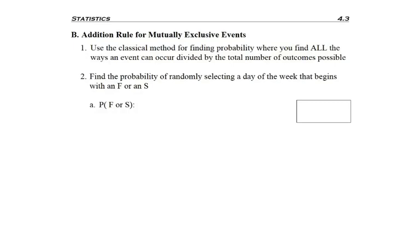In problem two, we're asked to find the probability that a day of the week begins with an F or an S. We want to pick one day of the week, and we're looking for an F or an S. So we find all the ways that that can happen: Friday, Saturday, Sunday.